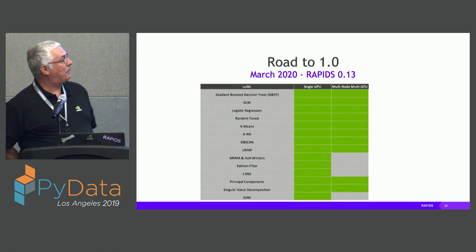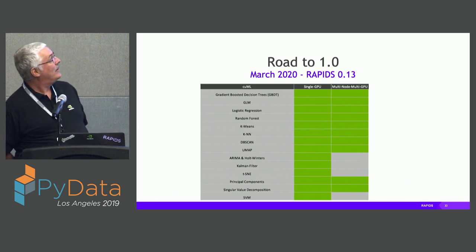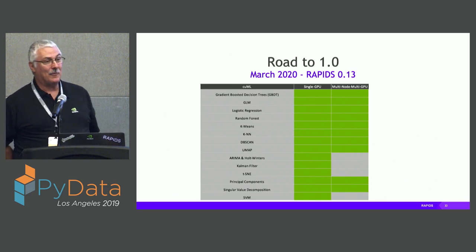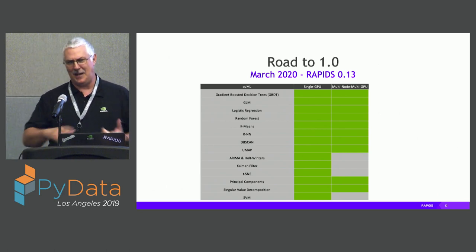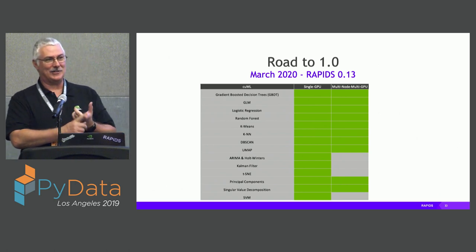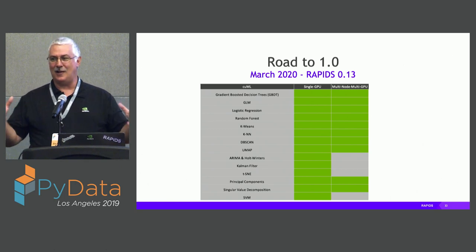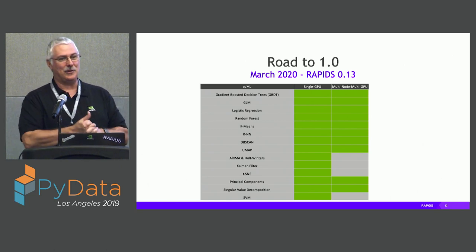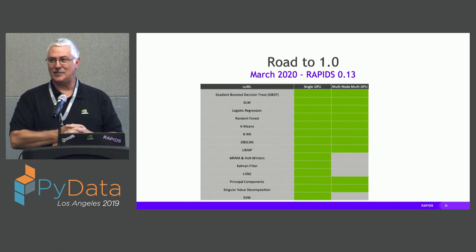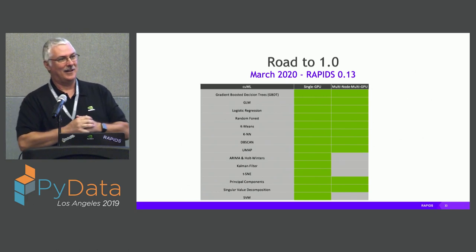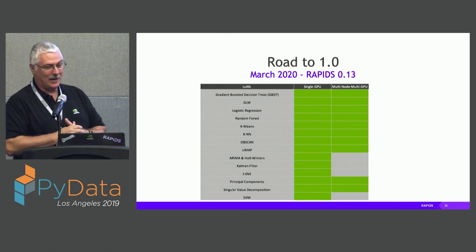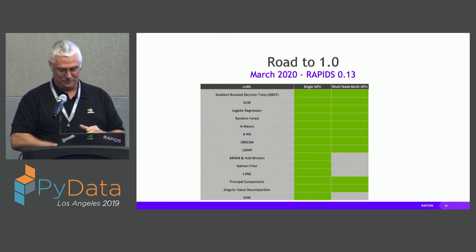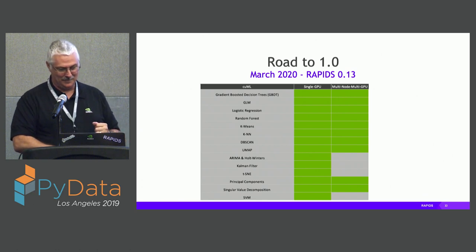This is a partial view of the roadmap. Hopefully by March everything will be running on multiple GPUs. Typically we start with making it work on a single GPU and then expand to multiple GPUs — there's a lot of complexity in getting things distributed past one node. Our plan is to have all of that done and more by March when we hit version one.